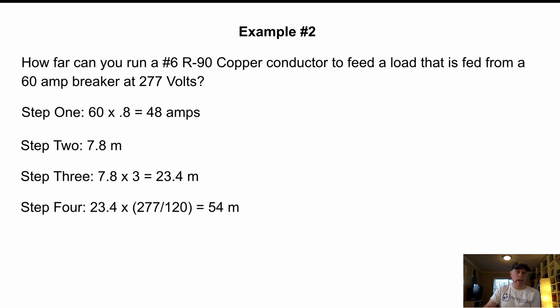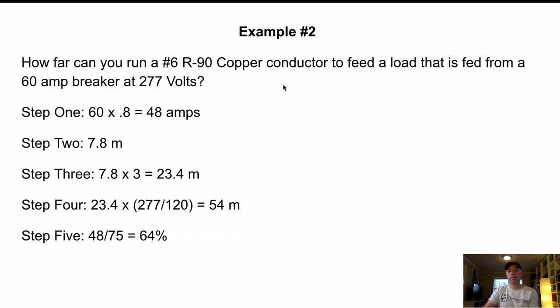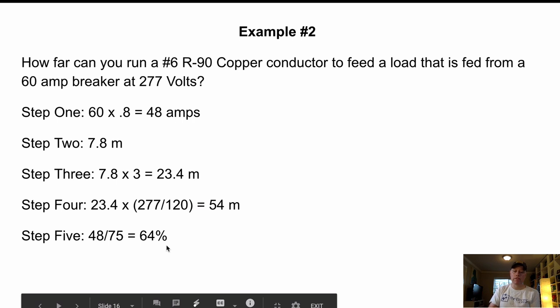But we're not done yet. We need to check on the distance correction factor. So we've got a cable that is rated 4. Let's just take a look here. Again, we're in table two because we're using copper and we've got more than one. So number six is good for 75 amps at the 90 degree column. So we're putting 48 amps on a 75 amp rated cable, which means we're using 64 percent of that cable.